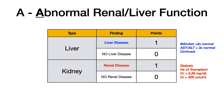A stands for abnormal, and there are actually two points you could score here depending on whether you have liver disease or kidney disease. For liver disease, if you have it, you give one point; if not, zero points. Liver disease includes bilirubin greater than two times normal, AST or ALT greater than three times normal, or the presence of cirrhosis — any one of those findings counts as liver disease for one point.